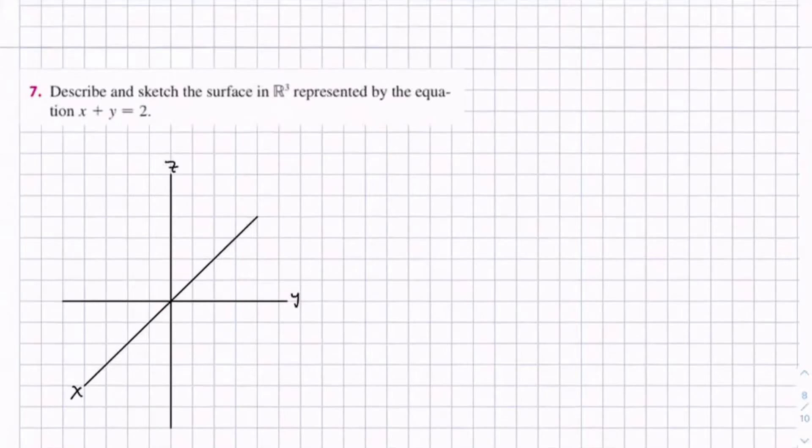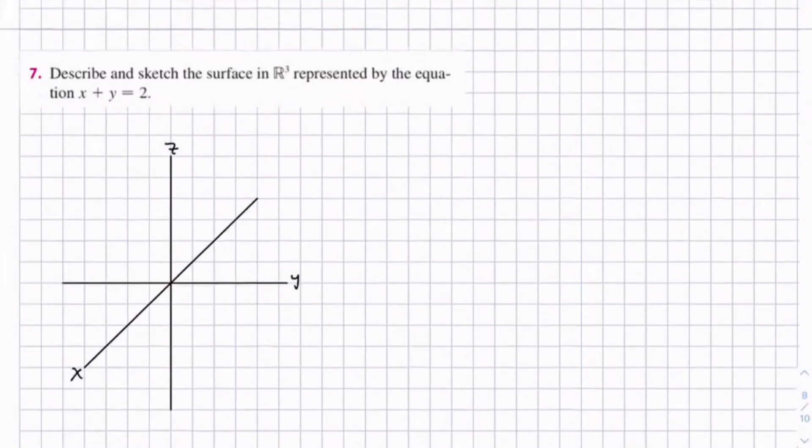So, one thing in this equation I notice is there's no z component, so z is unbounded, it can equal anything. So that means we can draw this equation in our x, y plane.